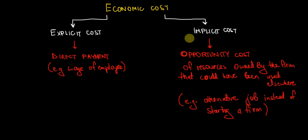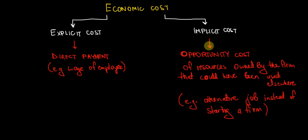When we are considering both types of costs as a firm, we must consider how much payments we actually have to make for our labor, for our capital, for our land. And on top of that, how many resources are we giving up by doing what we are currently doing — how many resources that we own at the moment could be used somewhere else?